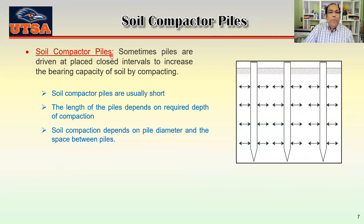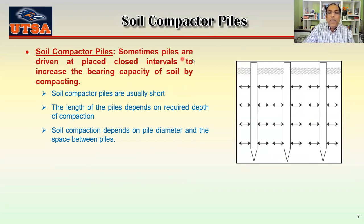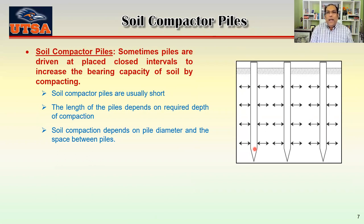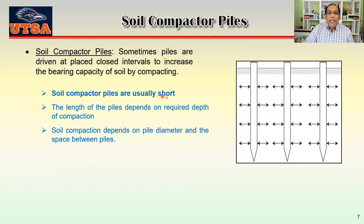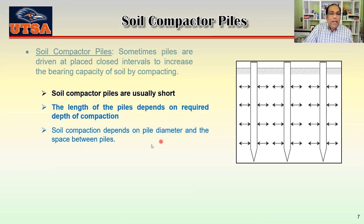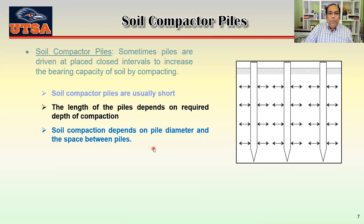Soil compactor piles are driven at close intervals to increase the bearing capacity of the soil by compaction. These are high-displacement piles — usually timber piles — and they're solid, so when you push them, they displace the soil and make the soil very dense in between. Compactor piles are usually short, and their length depends on how far you want to achieve your soil compaction. Soil compaction depends on the pile diameter and the spacing between piles. If pile diameter is bigger, displacement of soil will be bigger; and when pile spacing is closer, the soil will be more dense.